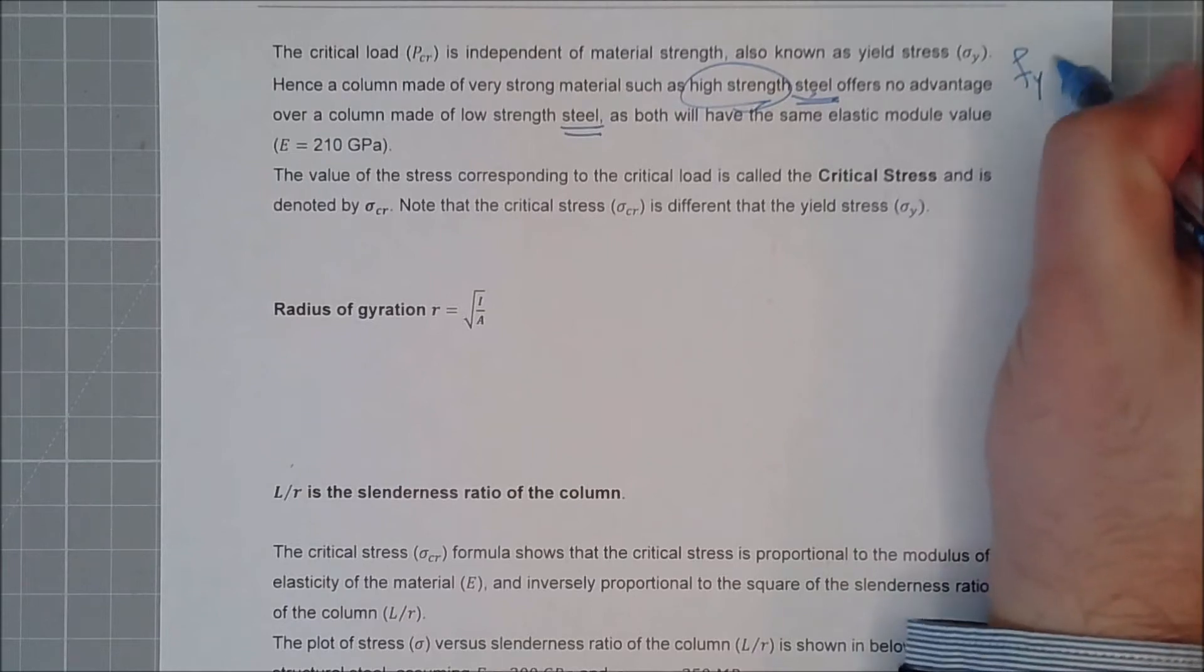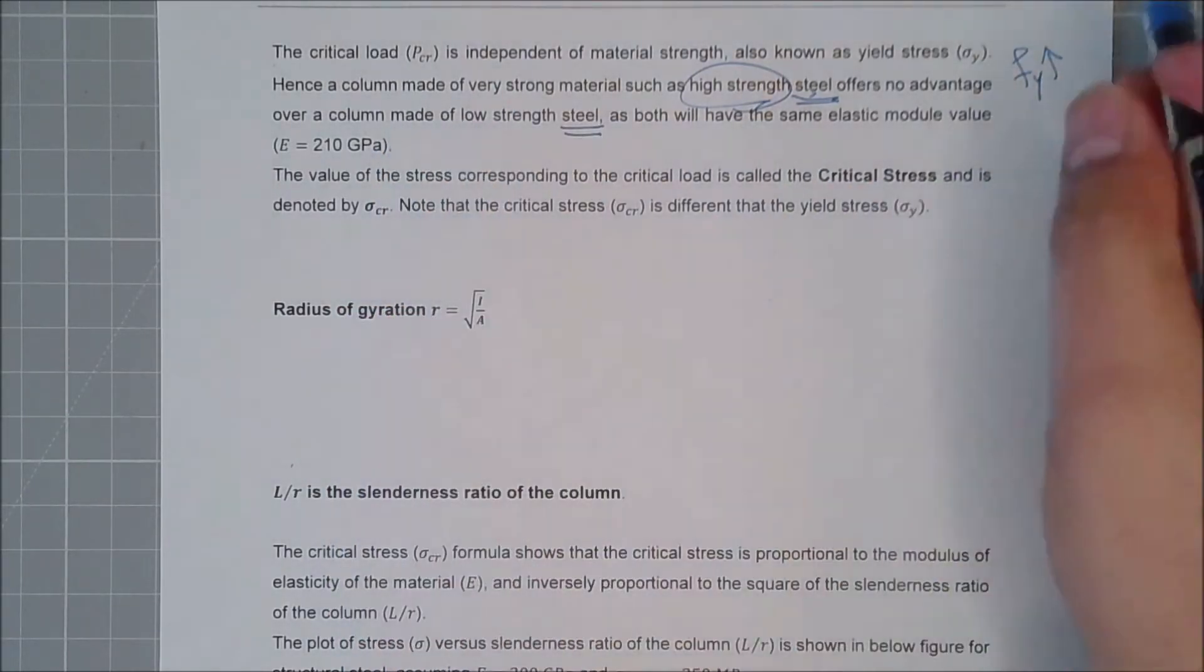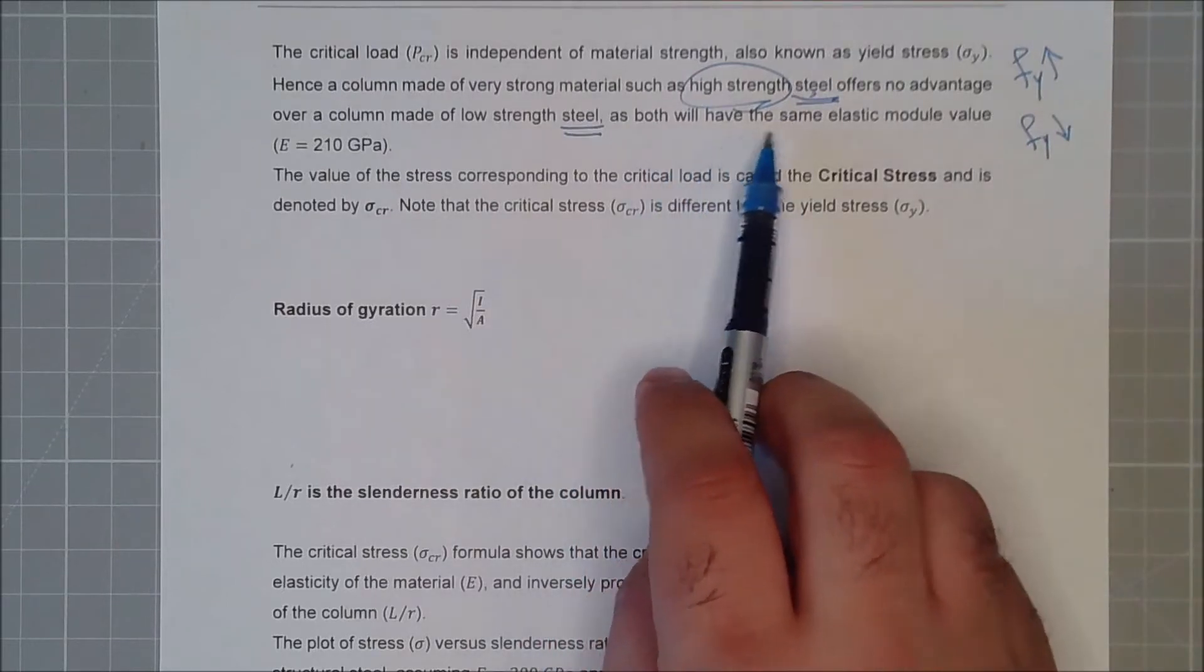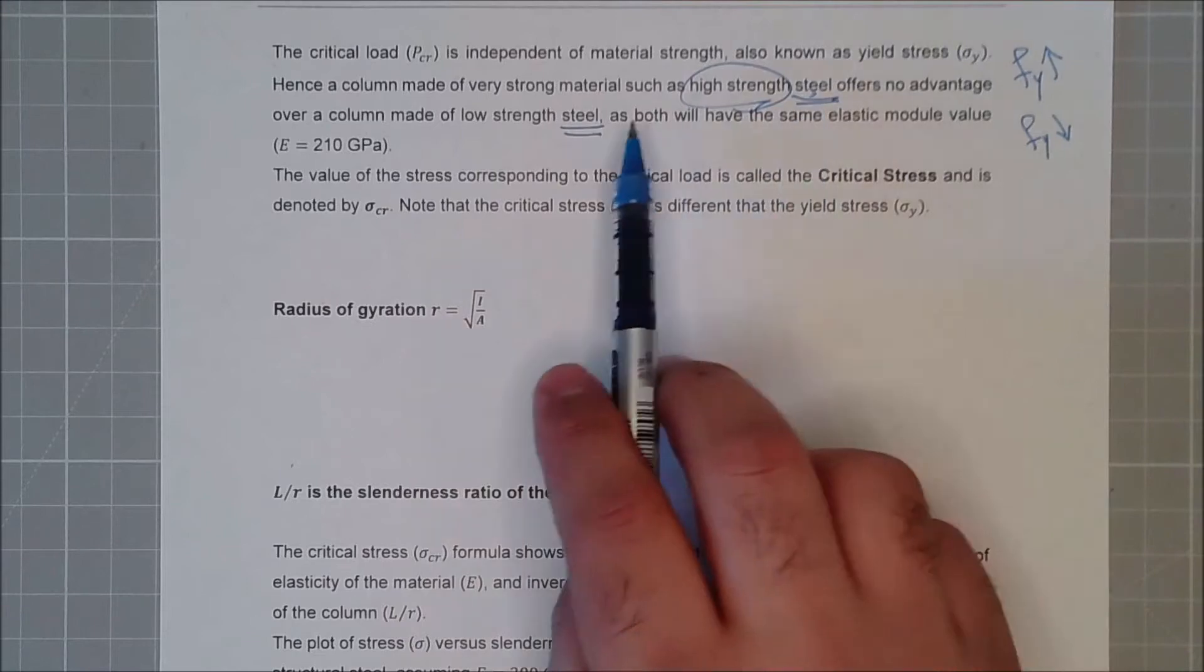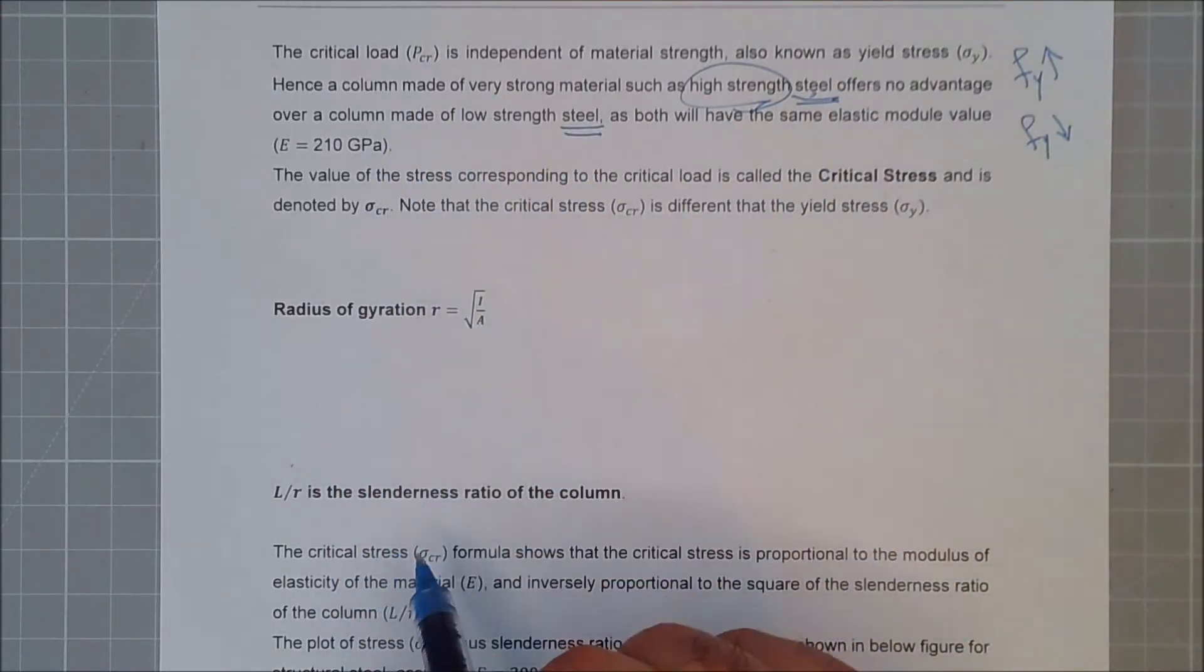So Fy is lower. But both of them have the same elastic modulus because they have same steel, but really doesn't have any advantage in terms of buckling.